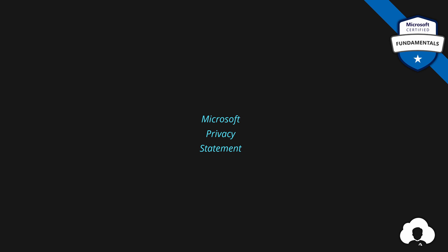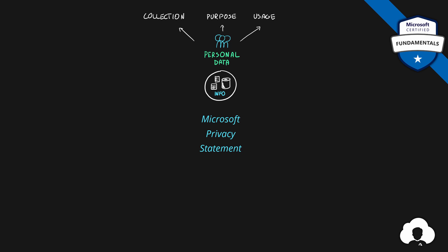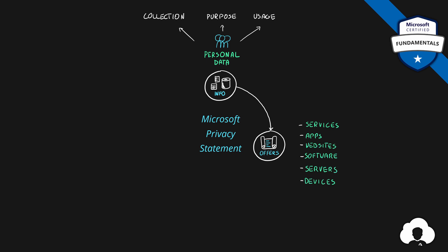With Microsoft Privacy Statement, let's start with the info. This document talks about personal data — the collection of that data, the purpose of that collection, and the usage across different services. It describes this information in the context of all Microsoft offerings: services, applications, websites, software, servers, or even devices. So if you have anything from Microsoft — like Windows, Azure, a Surface phone, Xbox, or simply Office — all those services interact with your personal data. Microsoft Privacy Statement describes what kind of information is collected for each one of those services, for what purposes, and how it's being used.